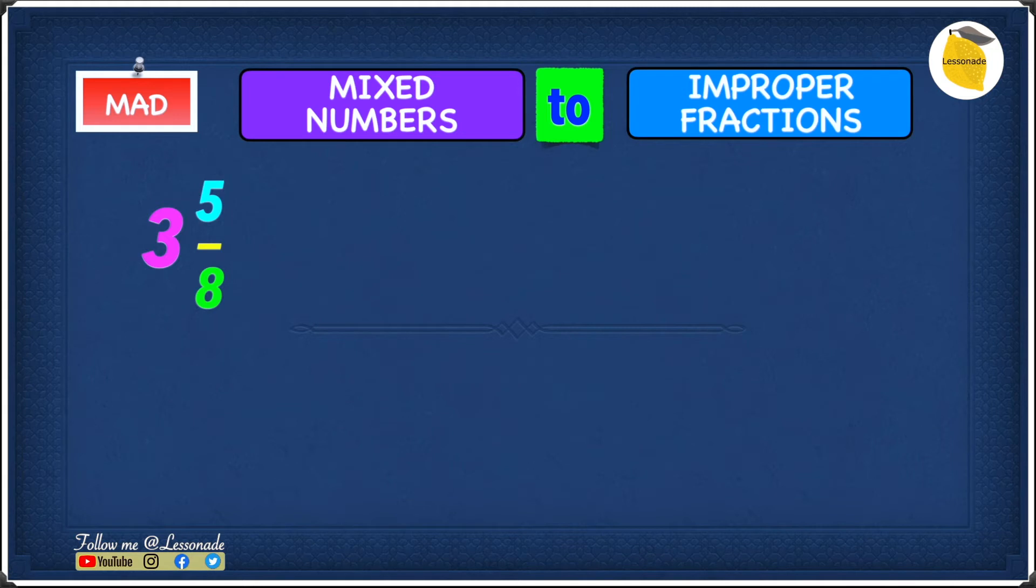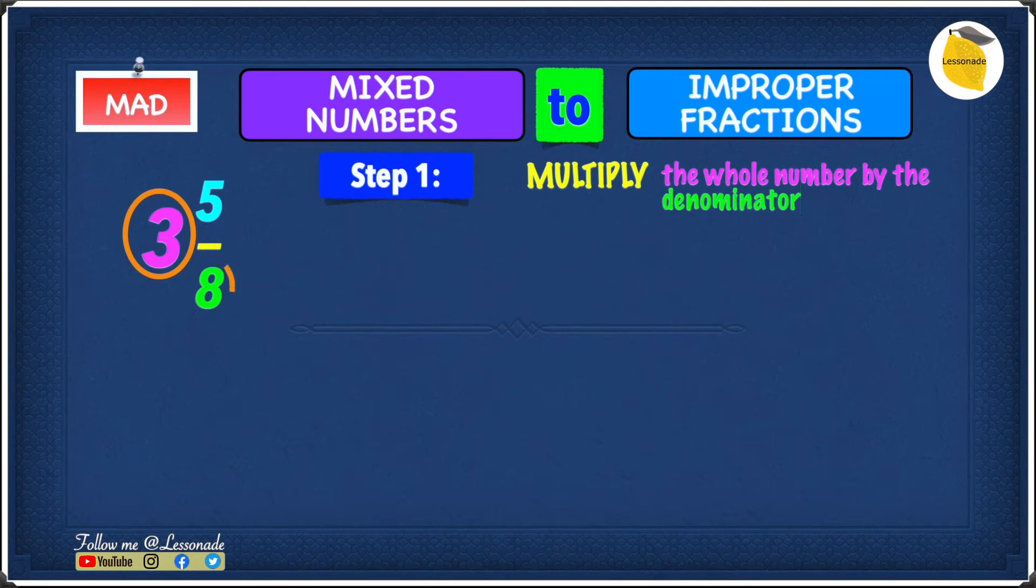And 3 and 5 over 8 is a mixed number. So let's start with step 1 first. So step 1 is to multiply the whole number, which is 3, by the denominator, which is 8. So 3 is the whole number, and we're going to times this by the denominator, which is 8. 3 times 8 is going to give you 24.